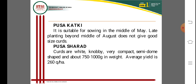Pusa Sarad produces white, nobby, very compact, semi-dome-shaped curds. The average curd weight is 750 to 1000 grams. The average yield of this variety is 260 quintals per hectare, making it one of the highest-yielding cauliflower varieties among all cultivation practices.